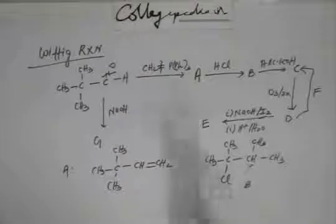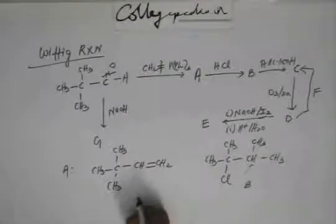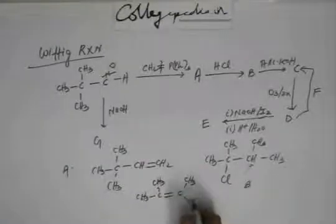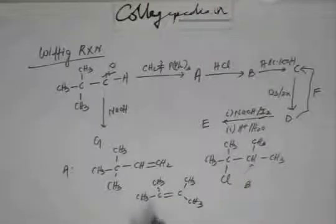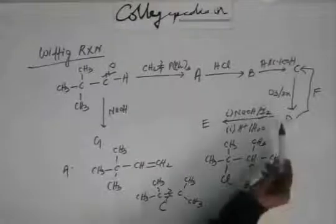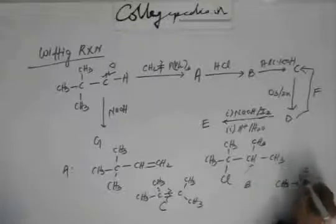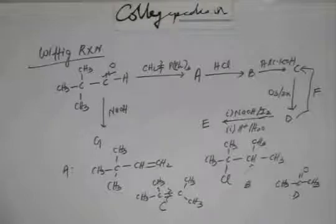This is the most stable alkene and this is C. No trouble. And on C, you are doing ozonolysis. So, do ozonolysis. Break it like this. Add oxygen to both the carbons and you are going to get acetone from both the sides. Both the product will be the same. What will be D? D will be acetone. This is D.